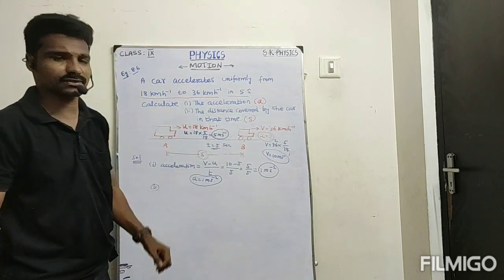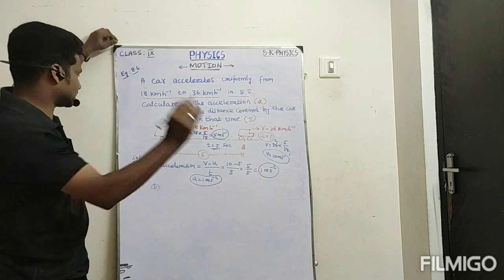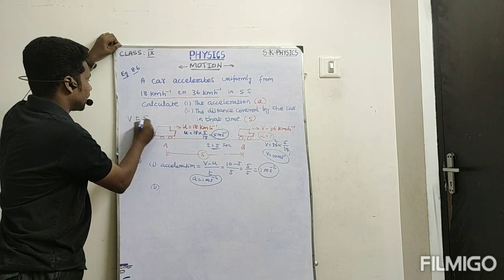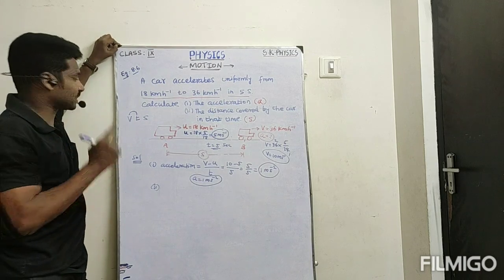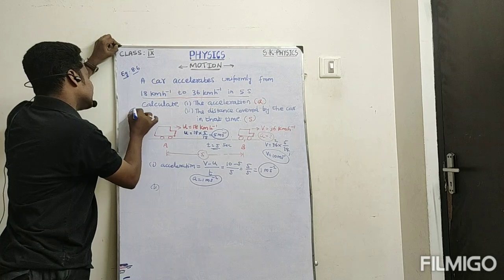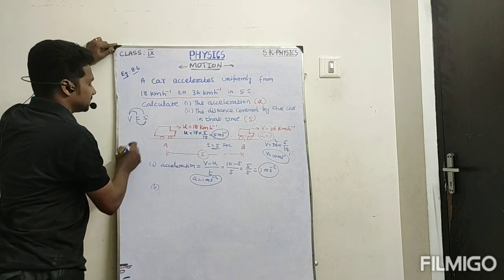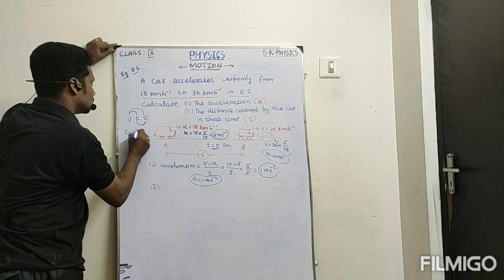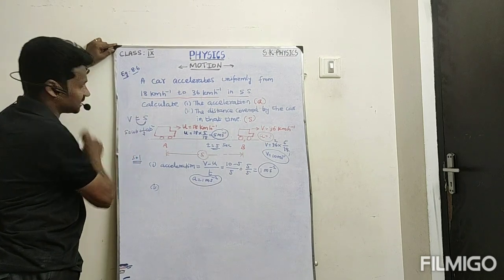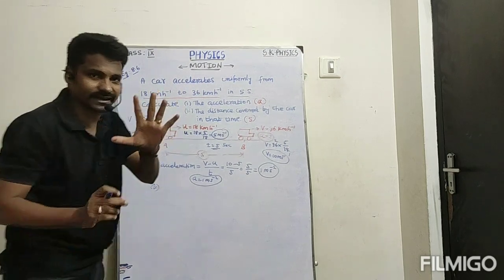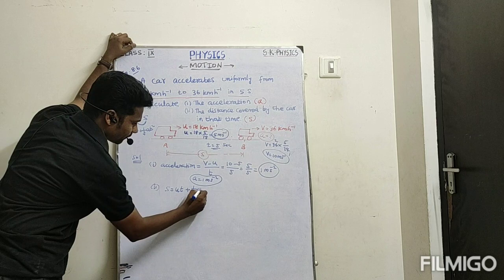For the second part, distance covered is represented by S. Using the equations of motion — velocity-time: V equals U plus AT; velocity-position: V squared equals U squared plus 2AS; and position-time: S equals UT plus half AT squared — we will use S equals UT plus half AT squared.